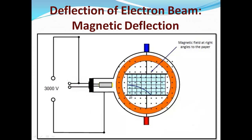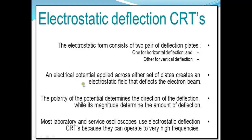The other type is electrostatic deflection. In cathode ray tubes, electrostatic deflection consists of two pairs of deflection plates: one is the horizontal deflection and the other is the vertical deflection. When an electrical potential is applied across either set of plates, it creates an electrostatic field that deflects the electron beam. The polarity of the potential determines the direction of the deflection, and its magnitude determines the amount of deflection.